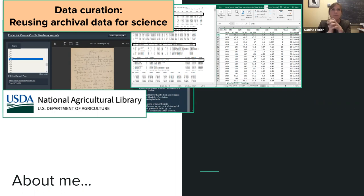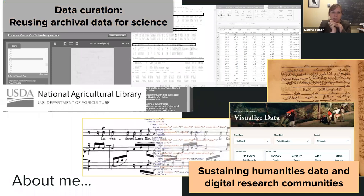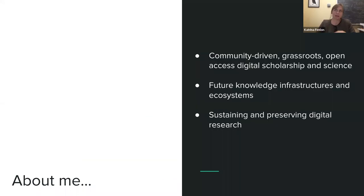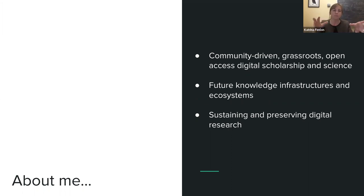Most of my research is focused on work in the humanities. The examples we'll be talking about today come from a research project on sustaining humanities data, and particularly sustaining the research communities that surround different kinds of digital projects in the humanities. What I'm interested in is community-driven digital scholarship and science, especially grassroots and open access work — thinking about the future of knowledge ecosystems across disciplines and what it means to sustain and preserve digital research as part of that ecosystem.